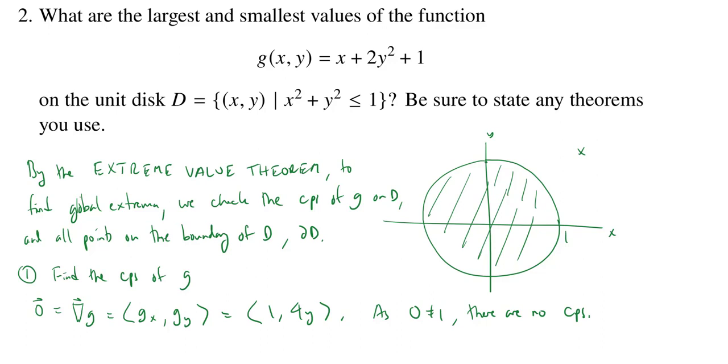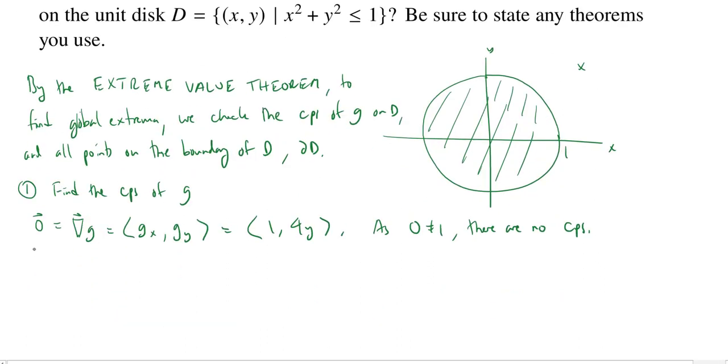So all we have to do now is check the boundary. Step two, we're going to check g on the boundary. Now, on the boundary, we're not worried about x squared plus y squared being less than or equal to 1. Now we only have to worry about x squared plus y squared equaling 1. So the boundary of D is given by x squared plus y squared is equal to 1. This is an extra constraint.